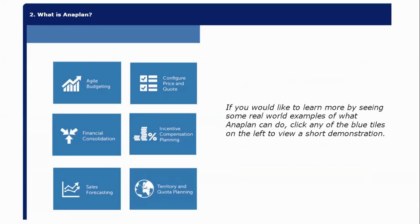In simple terms, Anaplan is a cloud-based planning tool. Whatever you do on Excel, you can do it in Anaplan, but Anaplan handles huge data sets. In Excel, if you have 1 million records, it will be very slow.